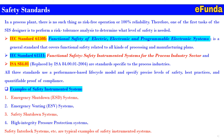Examples of safety instrumented systems include: emergency shutdown systems (ESD), emergency venting systems (ESV), safety shutdown systems, high integrity pressure protection systems (HIPPS), and safety interlock systems.